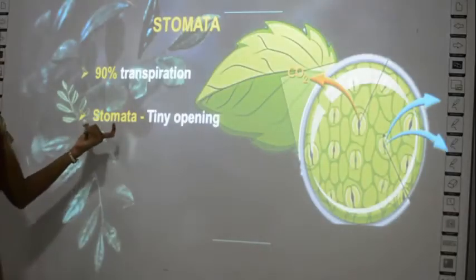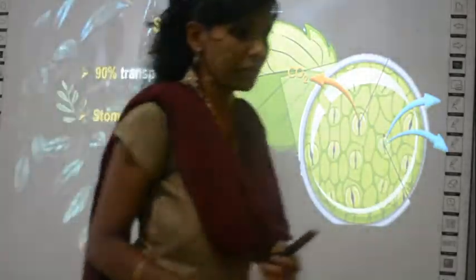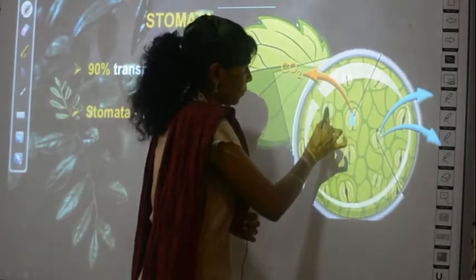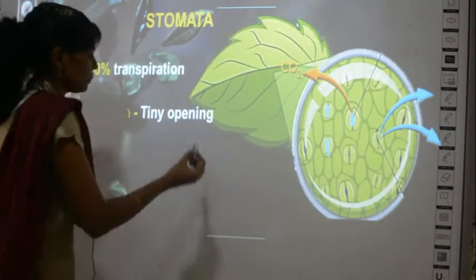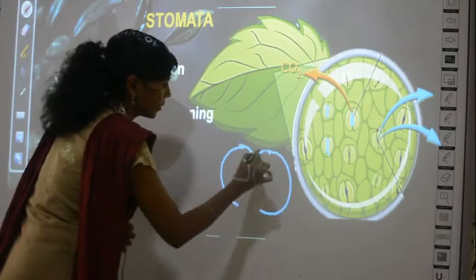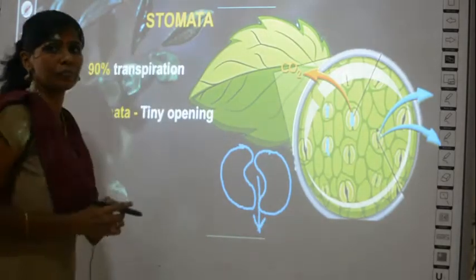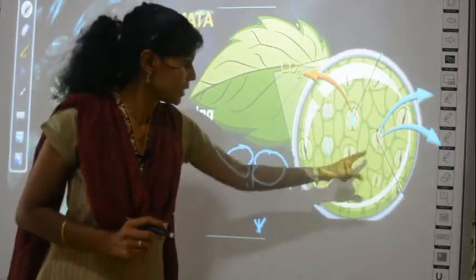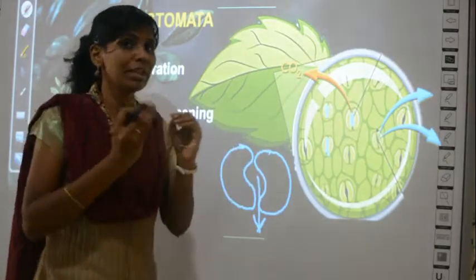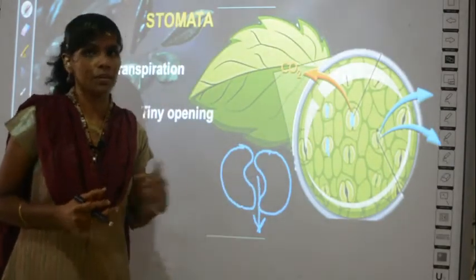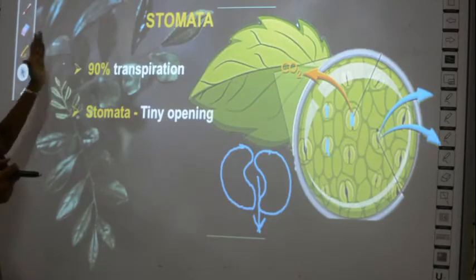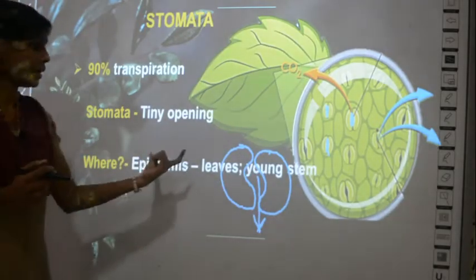What are stomata? Stomata are tiny openings. There are two cells called guard cells, and the opening between them is the stomata. You can see many such openings — this is the zoomed portion of the leaf. If a portion of a leaf is cut and placed under the microscope, you can see the stomata.